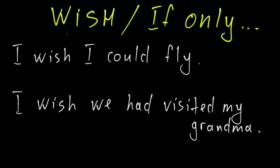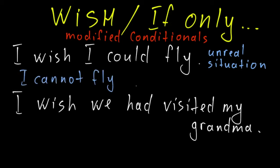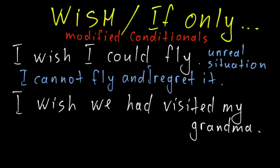These are modified conditional sentences. In the sentence 'I wish I could fly,' there is no visible condition — it's an imaginary situation, something I want to happen, something I want to be true, but it's not real. I cannot fly at the moment, so that's an unreal situation. The message behind it is: I cannot fly, but I want to, and I regret it. My wish or desire is impossible.